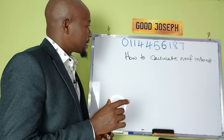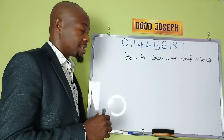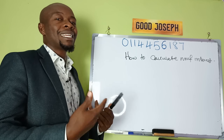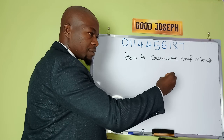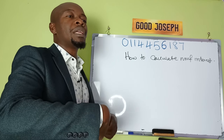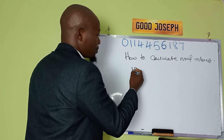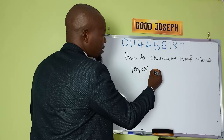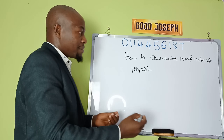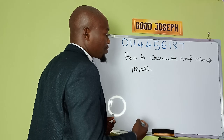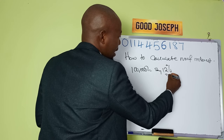Let's get to business. To calculate the money market fund interest, I'm going to use a simple example. You get the concept, then you use the money you're going to apply. Let's use a case scenario of 100K. You invest 100,000 in a money market fund and that money market fund is giving you an interest of, say, 12% per annum.